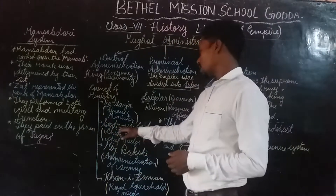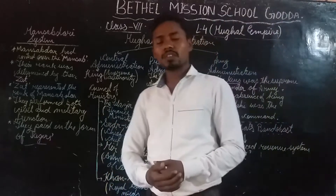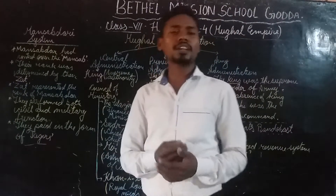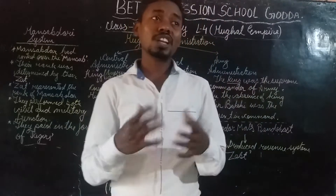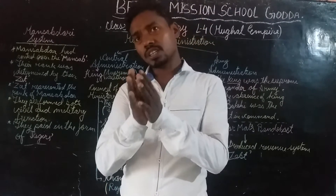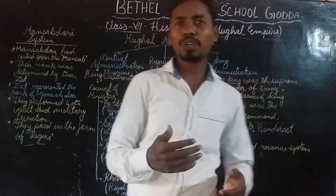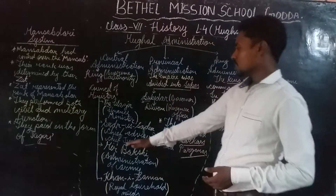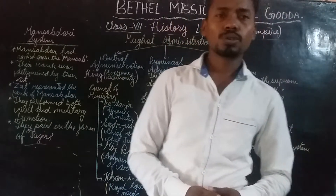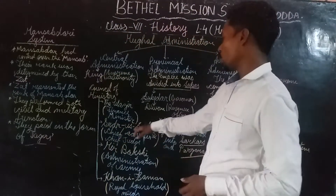Then we have Sadr-us-Sadur. He was the chief advisor of the king, especially in the case of religious matters. Also, if the king was absent, he could act as the chief judge — or the chief justice. So after the king, the chief justice role would be played by the Sadr-us-Sadur.